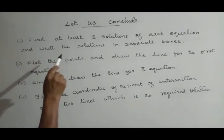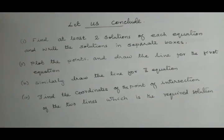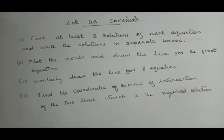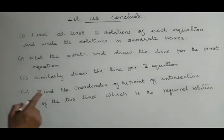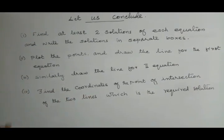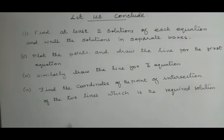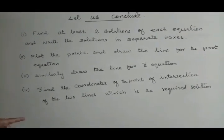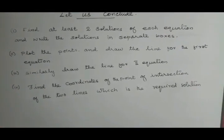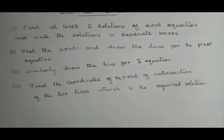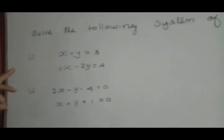To summarize the steps: first, find at least two solutions of each equation and write them in separate tables. Second, plot the points and draw the line for the first equation. Third, draw the line for the second equation. Lastly, find the coordinates of the point of intersection of the two lines, which is the required solution.